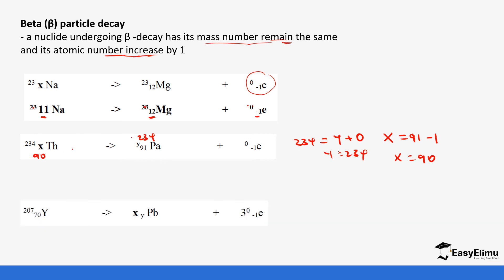Let's do another one. 207 on the parent equals x plus 3 times 0, which gives us x equals 207. It doesn't change. But for the atomic number, 70 equals y plus 3 times negative 1. So y plus negative 3 equals 70. If you bring negative 3 to the other side it becomes 70 plus 3 which is 73. So this becomes 73.